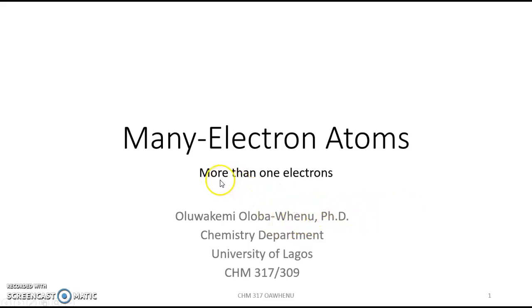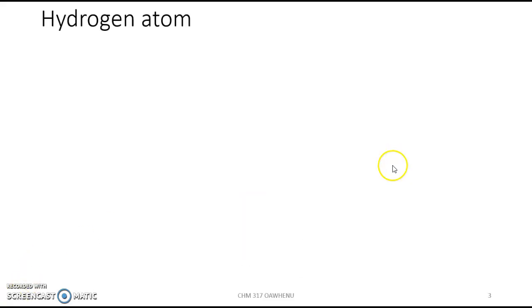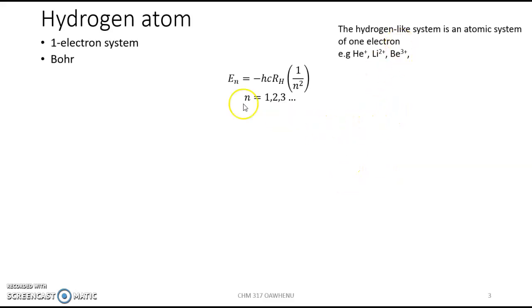A many electron atom contains more than one electron. It's different from the hydrogen-like system that contains just one electron. For the hydrogen atom that contains just one electron, Bohr was able to come up with an equation to explain the spectra.